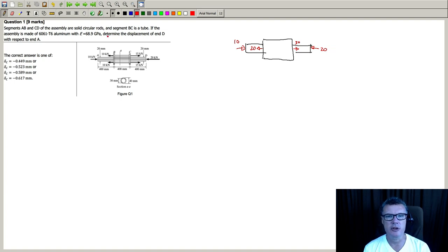Going this way we've got 20, going this way we've got 30, and going this way we've got 20. Now reading the question, it says determine displacement of the end D, so that's here, in respect to A.